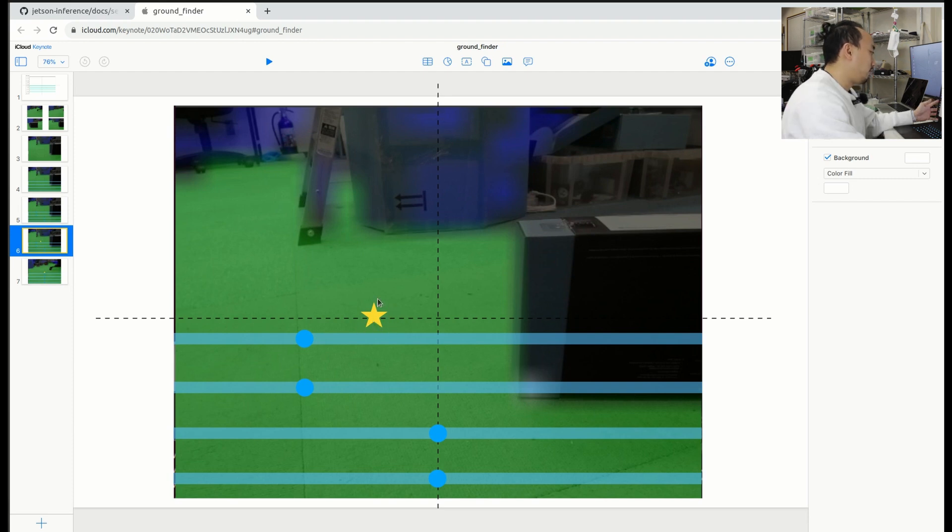Once we get this star value here we can convert this value into robot turning. If the star is on the left of the frame it means there is more open space on the left side. That means we should turn or steer the robot to that side.